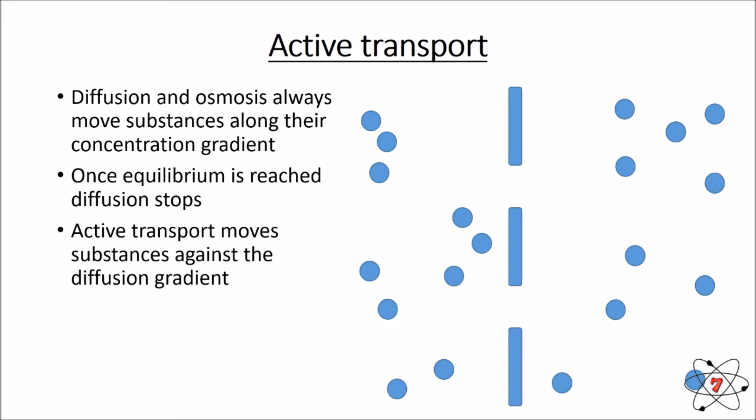Active transport can move substances against the diffusion gradient. This means we can move things even when in equilibrium and create a high concentration gradient, or even move things from an area of low concentration to an area of high concentration — obviously very different from diffusion. The problem is that active transport requires energy.